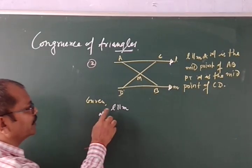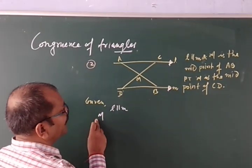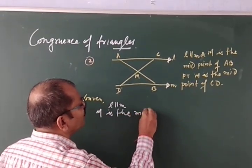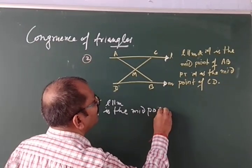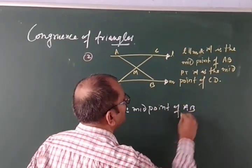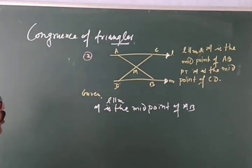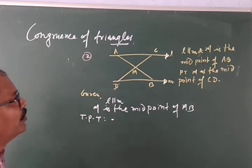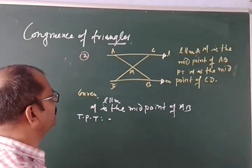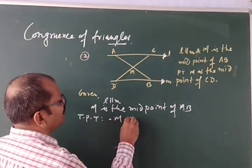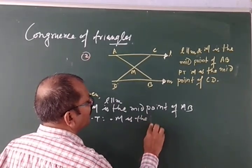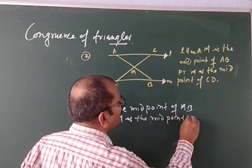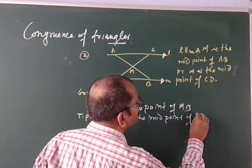Firstly, you have to write the given term. Given: L parallel M, and M is the midpoint of AB. After that, write down TPT, to prove that. What I have to prove? M is the midpoint of CD.